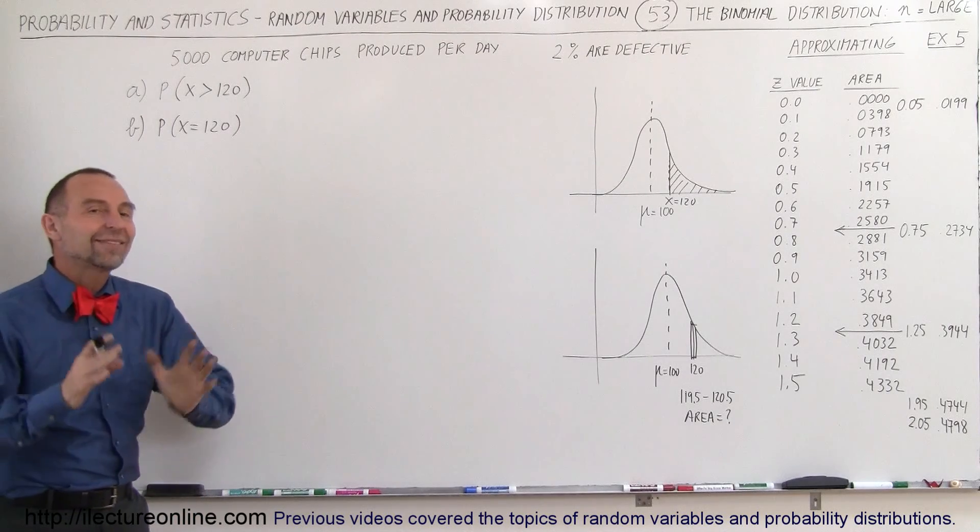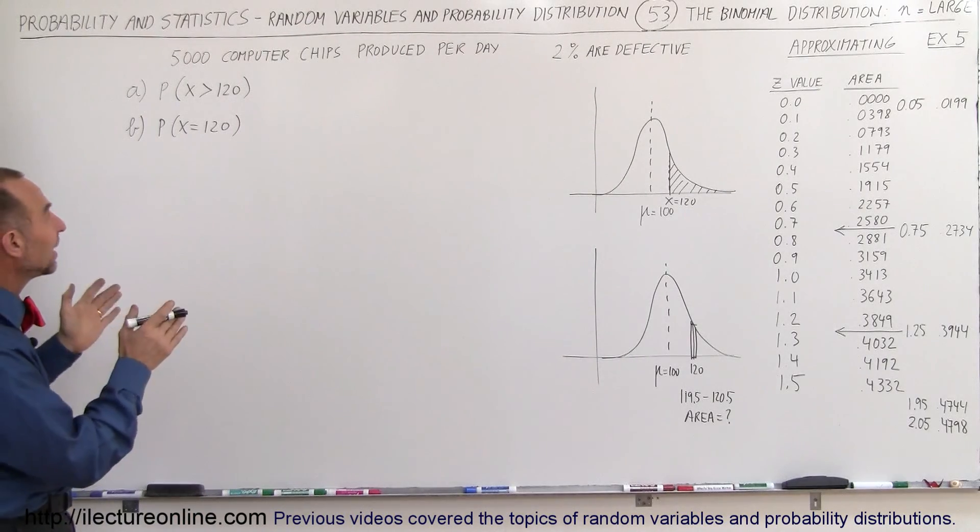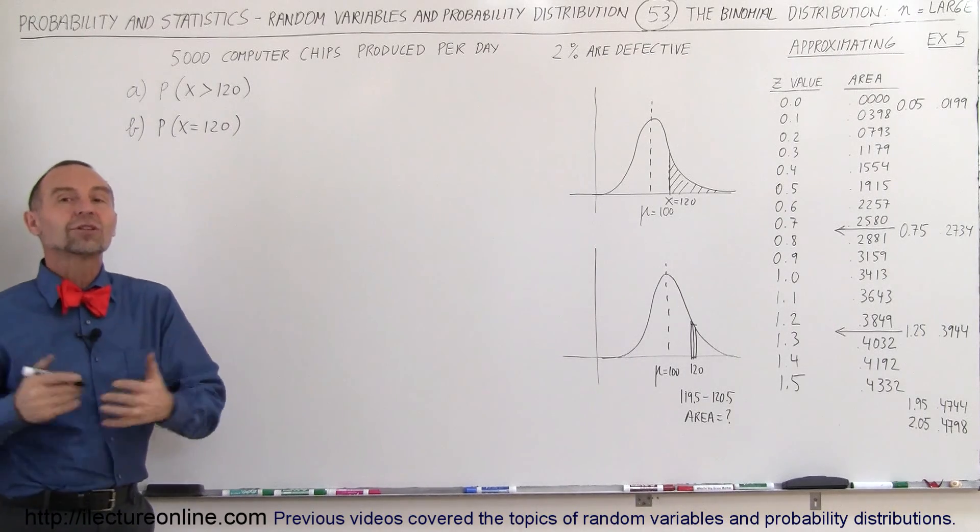Welcome to Electron Online. Now let's do one last example of how to find the probability of a certain range in what we call a binomial distribution.